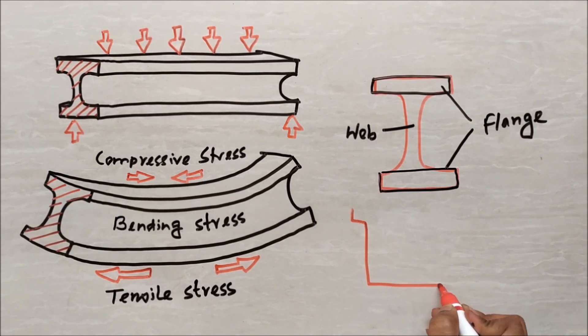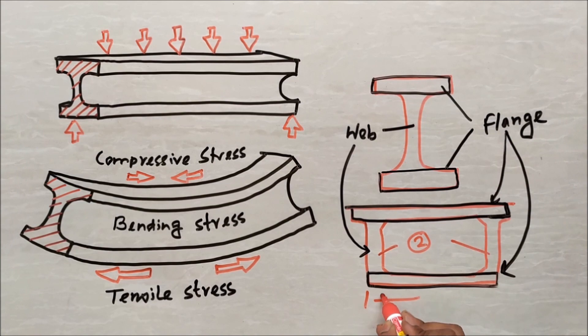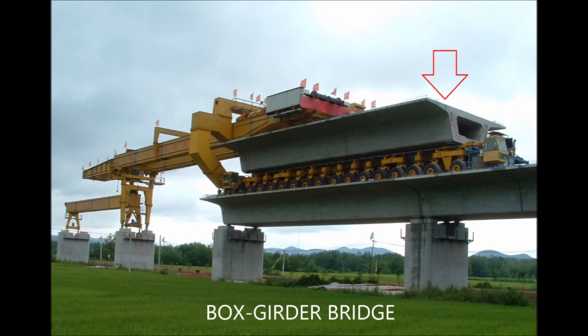In the box girder, there are also two flanges in the top and as well as in the bottom. Having two webs and wider flanges makes the box girder more stronger than I girder. In the next video, we will learn about other components of a girder bridge by simple concept.